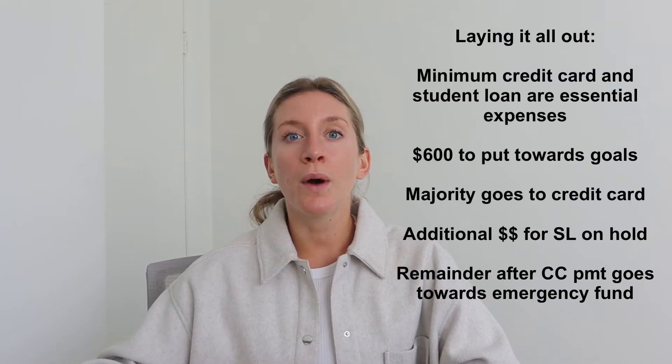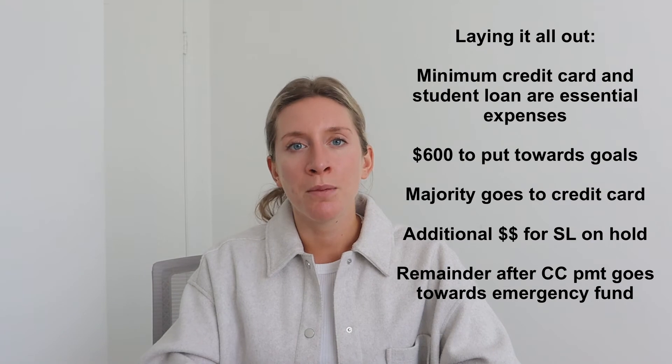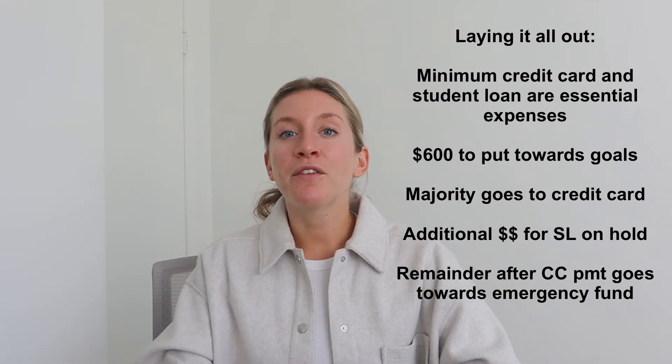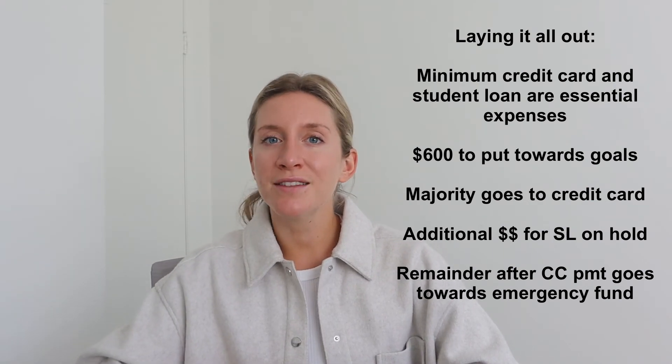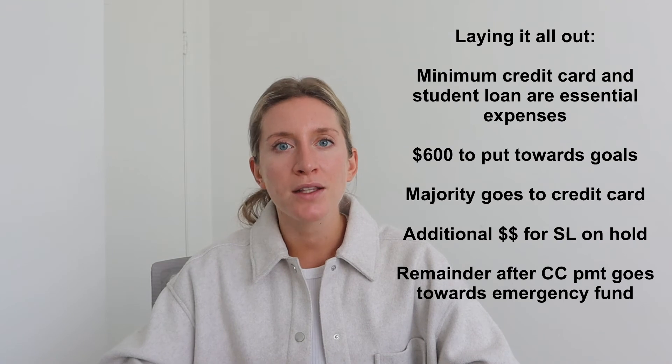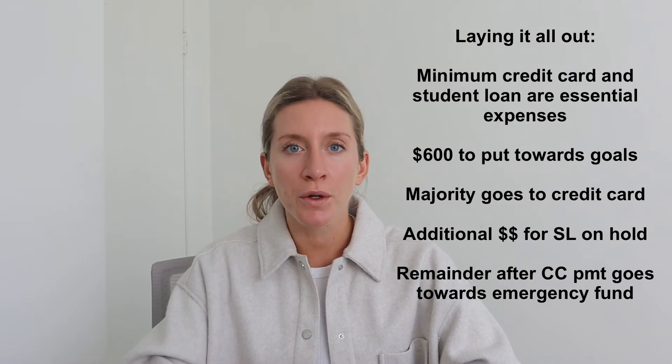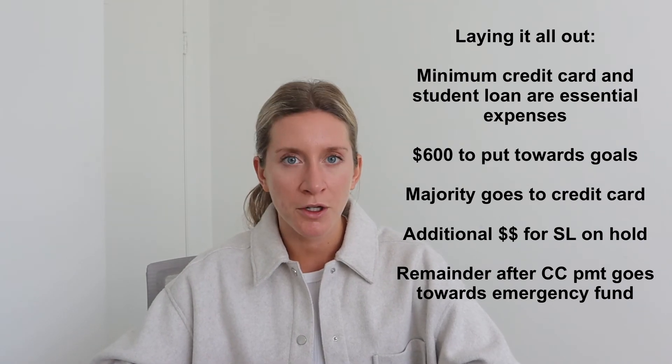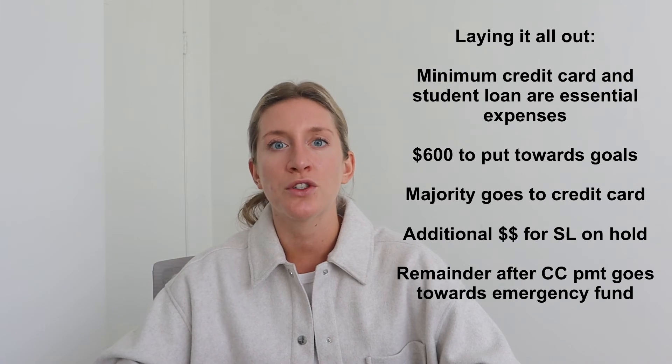In terms of the emergency fund, that should also be high priority — because if you don't have one and you run into an emergency, you have to put it on your credit card, which amplifies the credit card problem you already have. I would put the remaining money, around $200, towards the emergency fund to keep it as a high-priority goal. So the structure looks like: minimum credit card and student loan payments built into essentials, then $400 of the remaining $600 going towards the credit card, and $200 going towards the emergency fund.